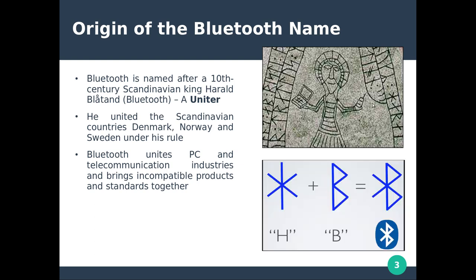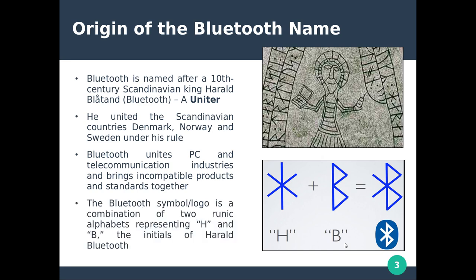Here you can see the Bluetooth logo, which is formed by combining the runic alphabet representing the letters H and B — the initials of King Harald Bluetooth. So that covers the origin of the name as well as the logo of Bluetooth.